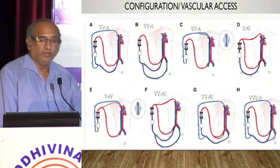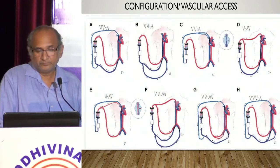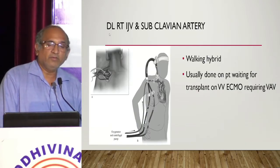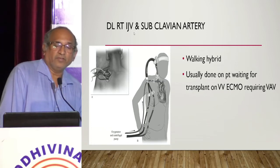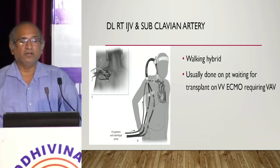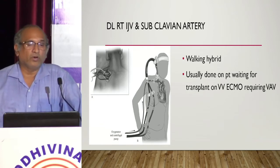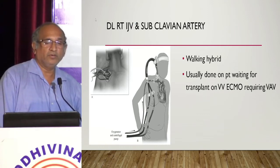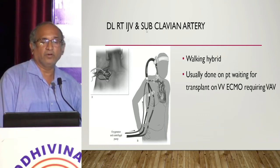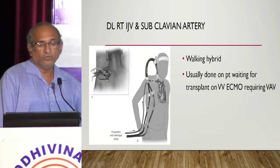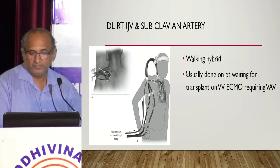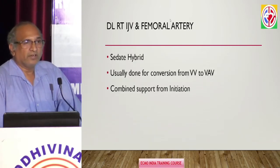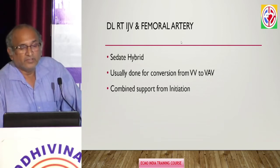For hybrid mode, depending on the vessels used, you have different combinations. Using a double lumen IJV and subclavian artery is typically done when a patient is waiting for transplant and develops right heart failure requiring VA-V or VV-A ECMO. With everything in the upper part, the patient can be easily mobilized — this is known as 'walking hybrid.' If you connect the femoral artery instead, mobilization becomes difficult and it is known as 'sedated hybrid.'